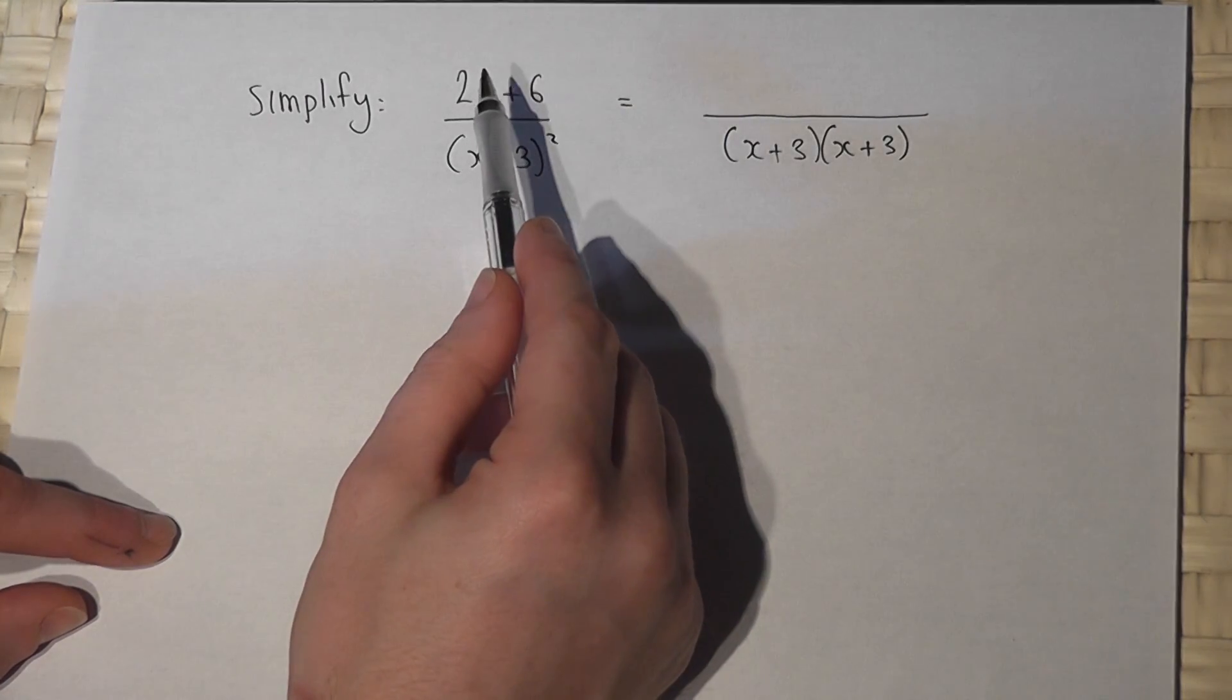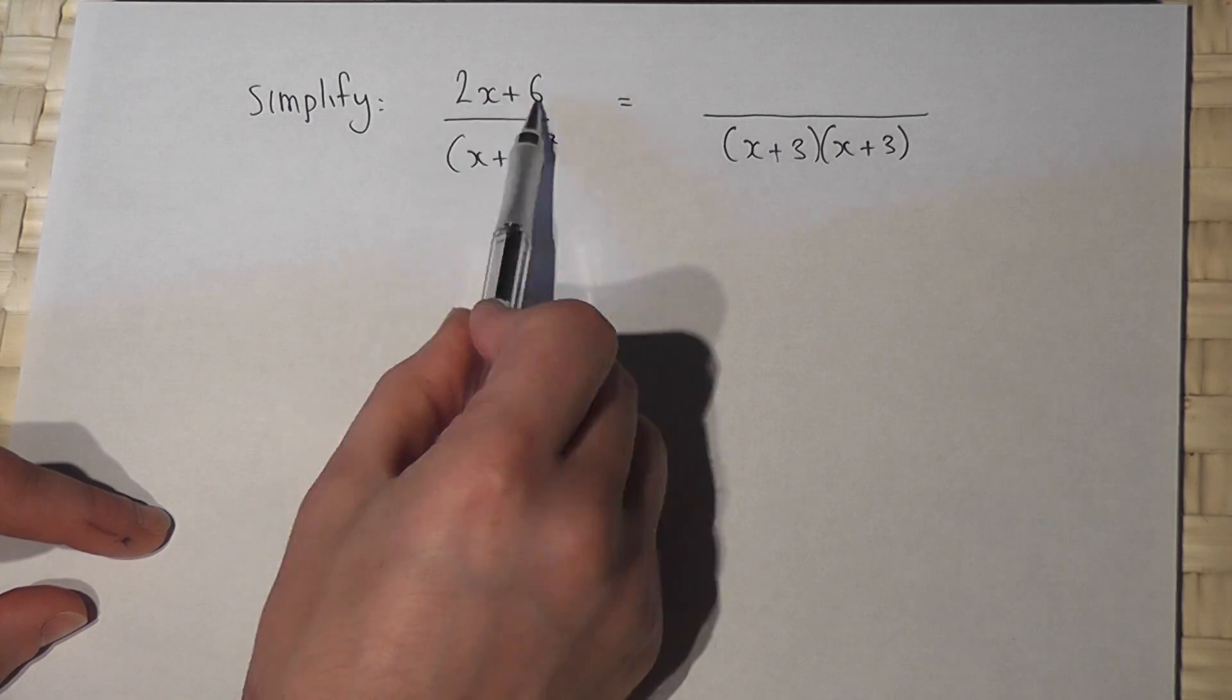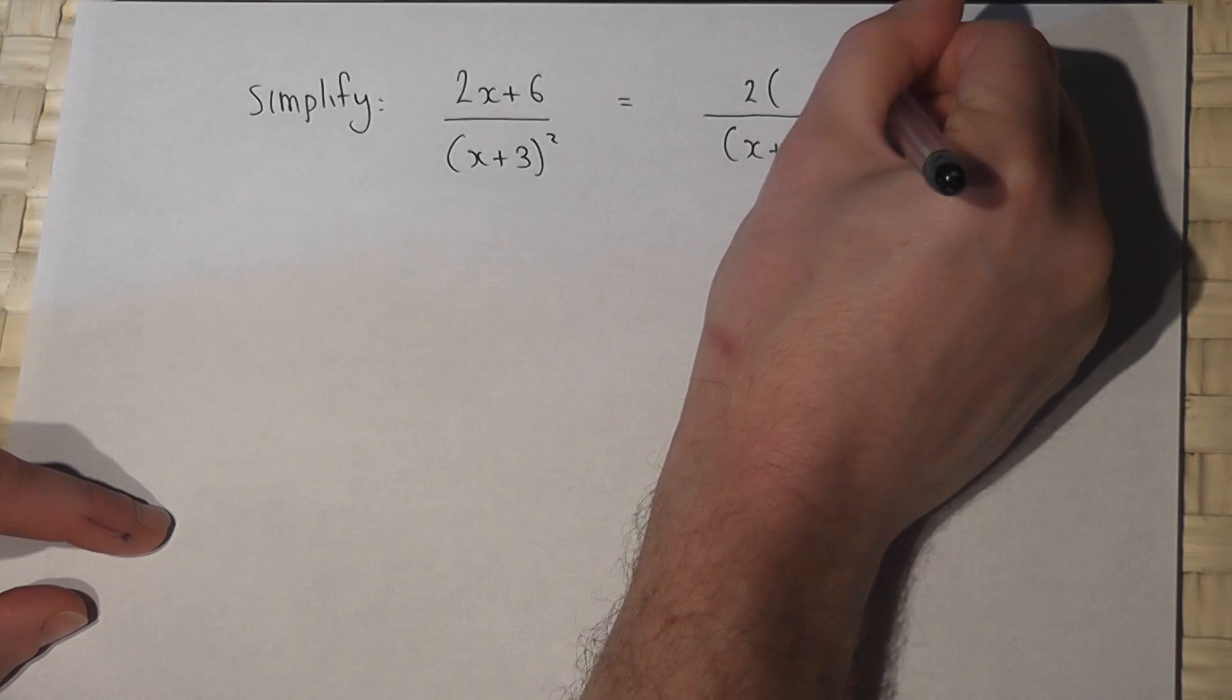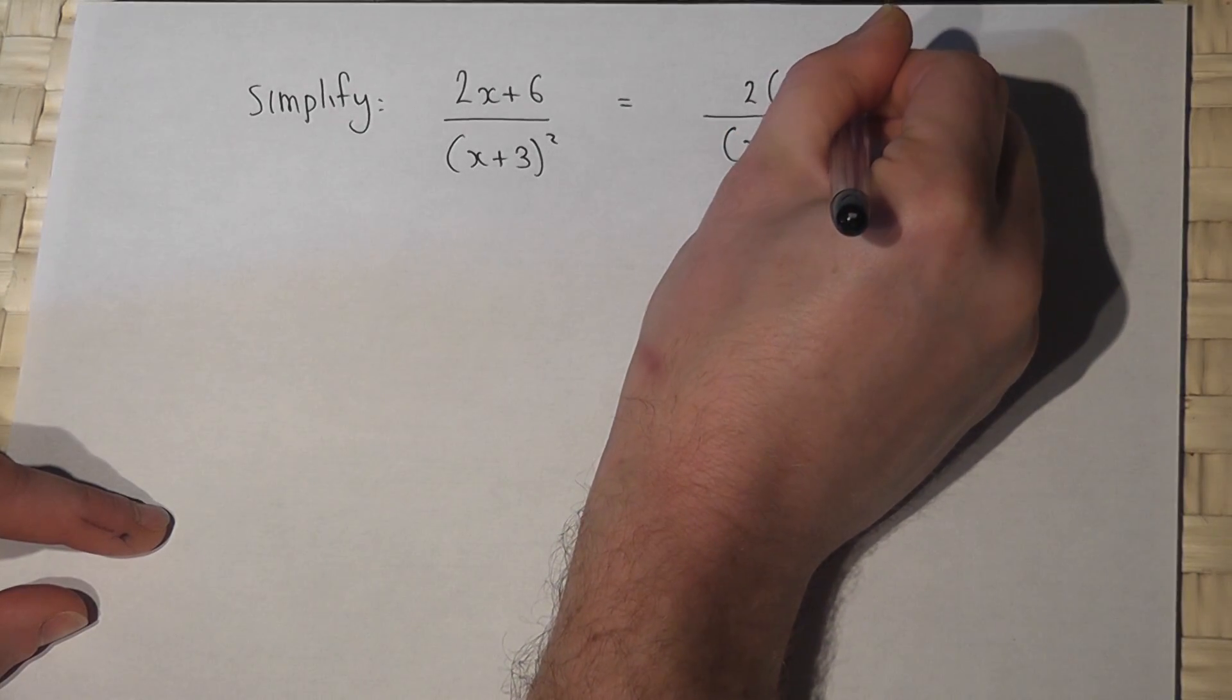The top can also be factorized. There's a factor of two in both terms, so I can write this as two bracket—two times x is 2x, two times three is six.